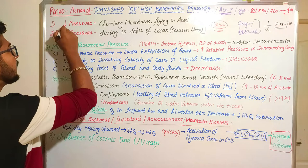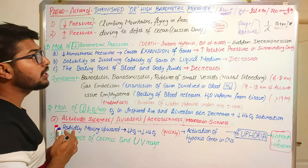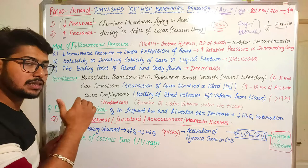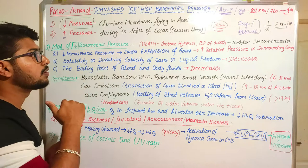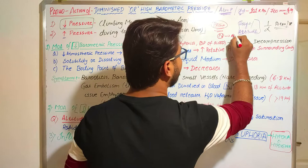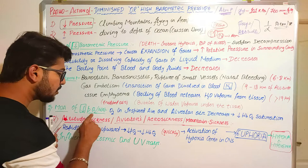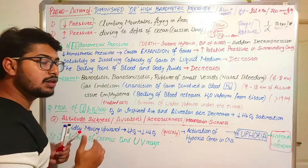If a decrease in barometric pressure occurs in the environment, what will be the pathogenic effect? First, there will be decreasing in atmospheric pressure. Second, there will be decreasing in the partial pressure of oxygen in the atmosphere as we move upward from the normal level. If we move upward towards the mountain direction, the atmospheric pressure will decrease, and the partial pressure of oxygen in the atmosphere will also decrease — and that will lead to pathology.